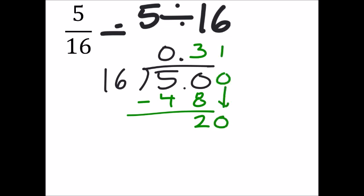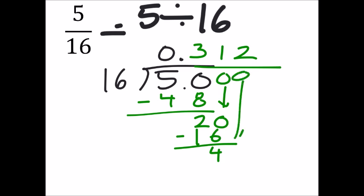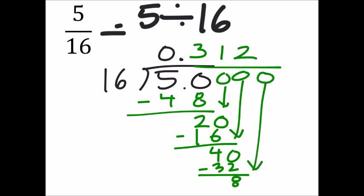So 16 goes into 20 one time. I'll subtract 16. I got 40, and now it goes into it twice because I made that 40. And then I've got 32. Maybe I'll run out of space, maybe not, which means I need another 0.